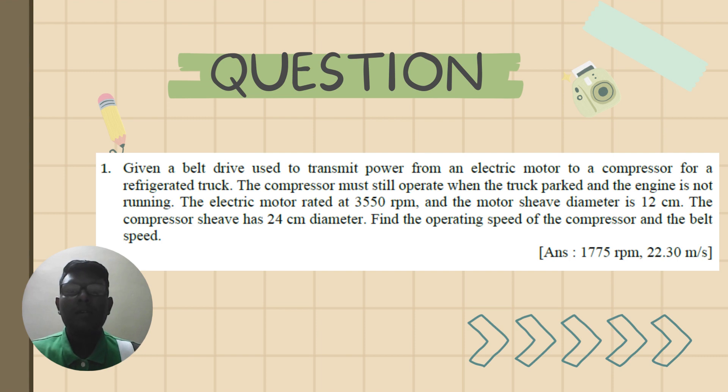...3550 rpm and the motor shaft diameter is 12 cm. The compressor shaft has 24 cm diameter. Find the operating speed of the compressor and the belt speed.